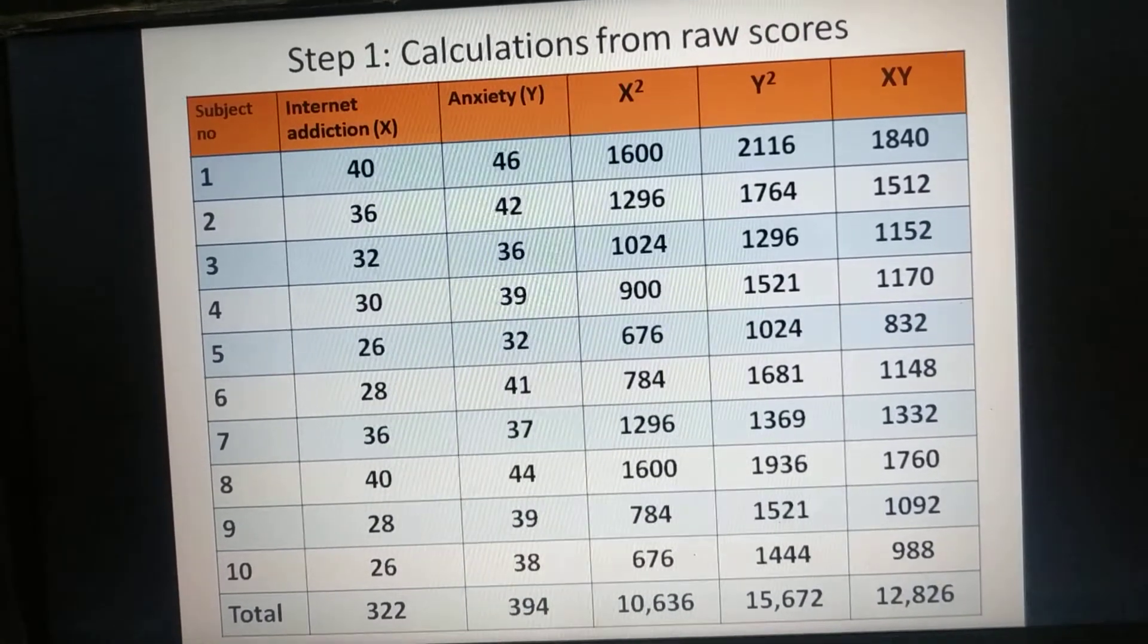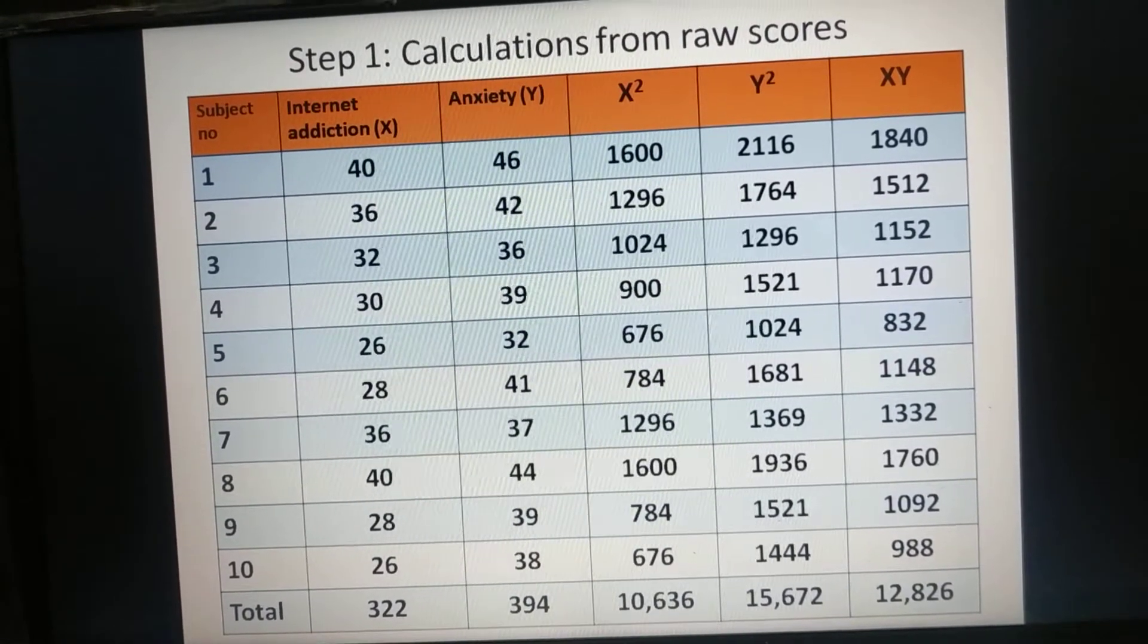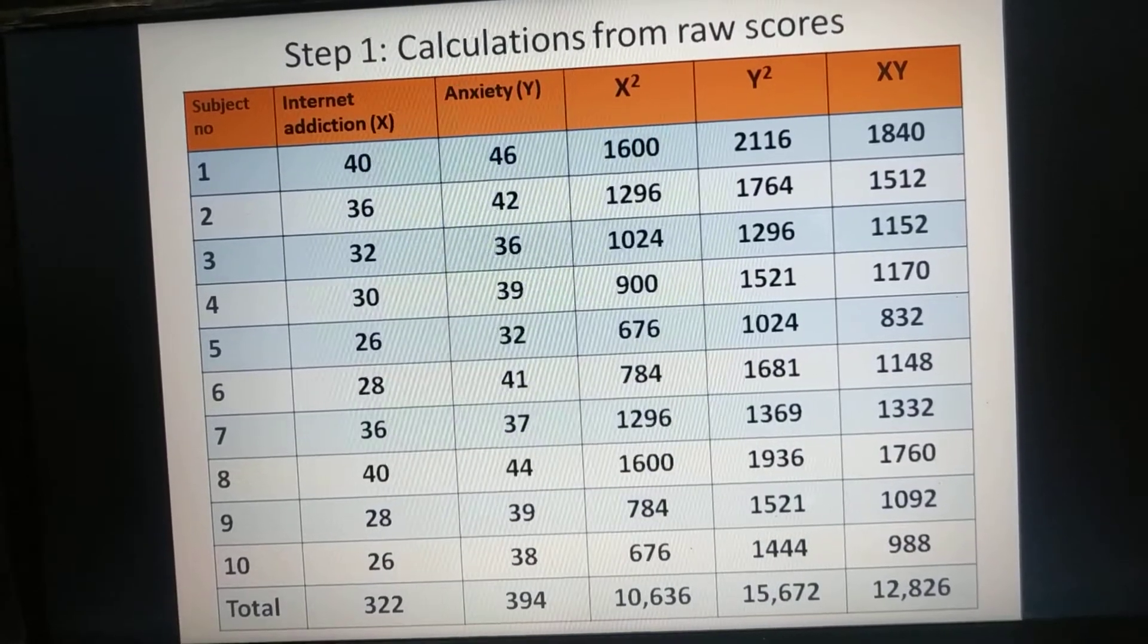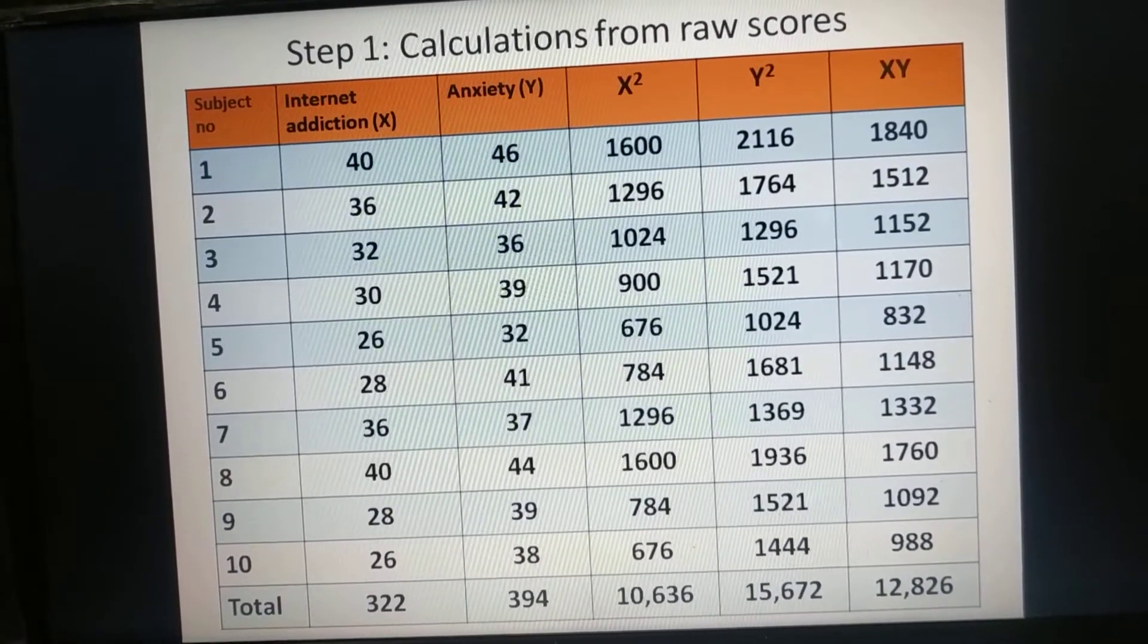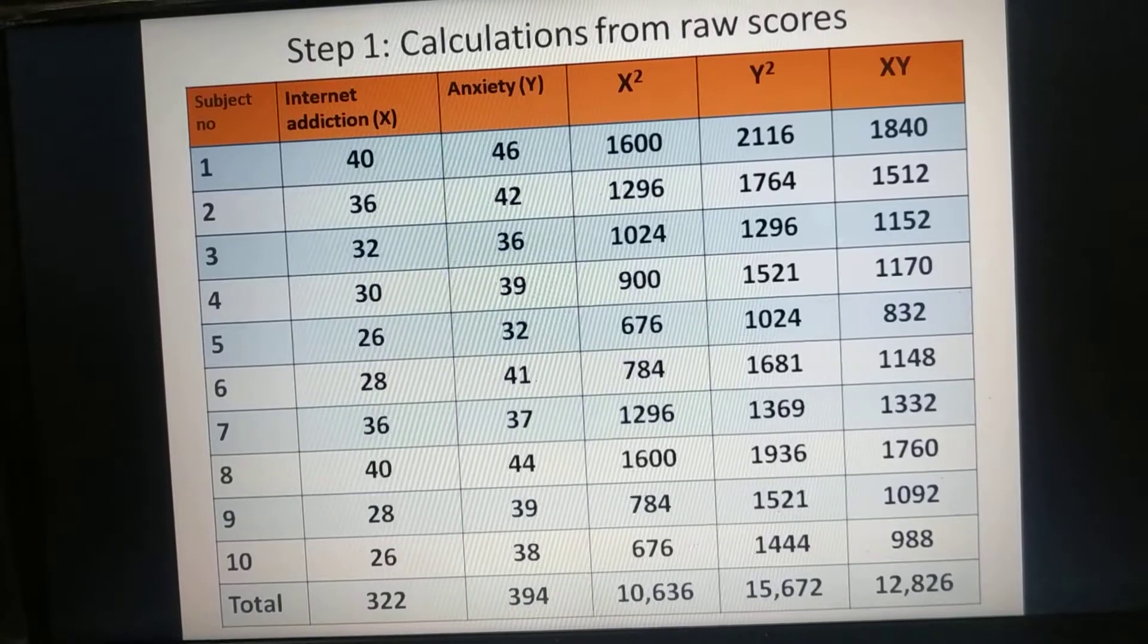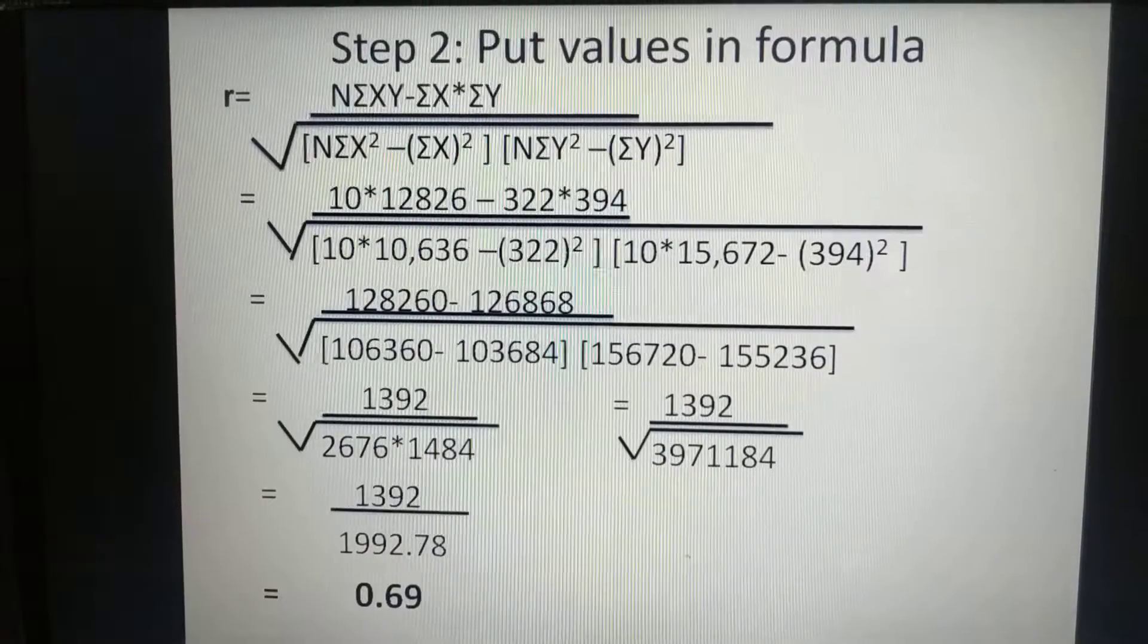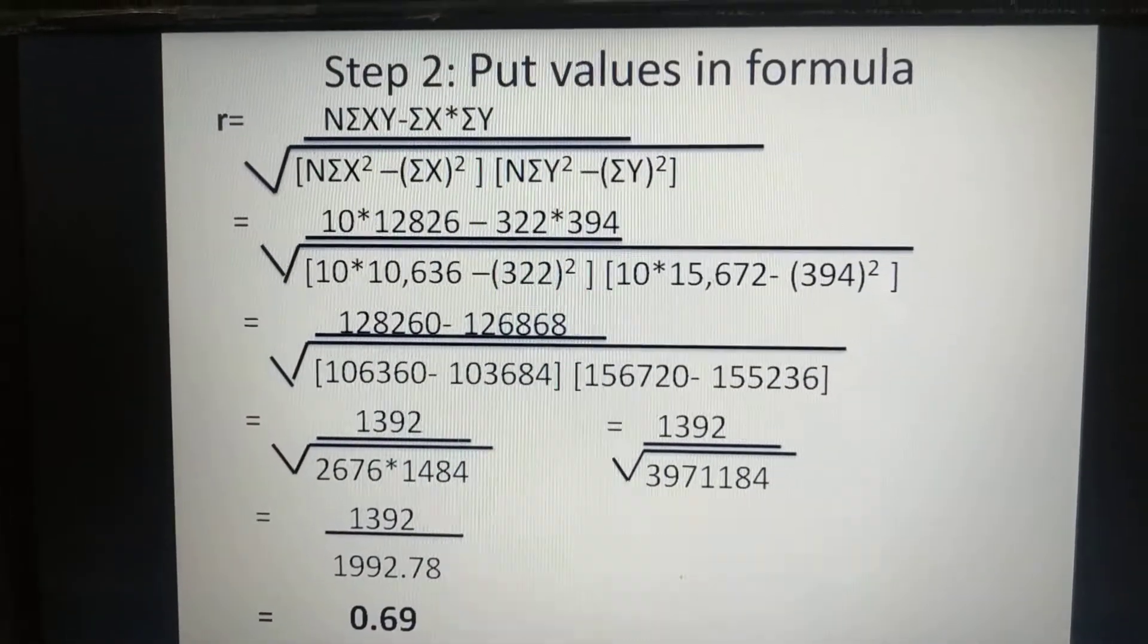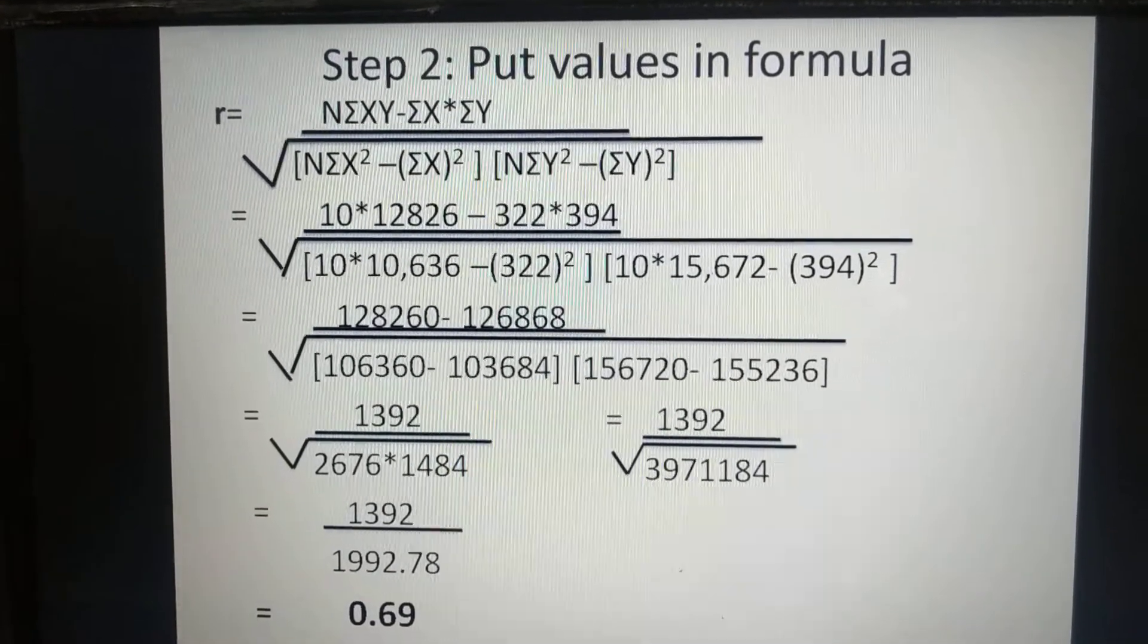Finally multiply the scores of X and Y and add all the total comes 12826. Step 2. Put values in formula.